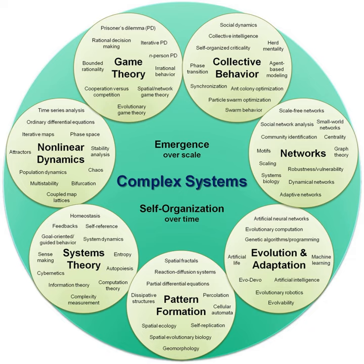As an interdisciplinary domain, complex systems draws contributions from many different fields, such as the study of self-organization from physics, that of spontaneous order from the social sciences, chaos from mathematics, adaptation from biology, and many others. Complex systems is therefore often used as a broad term encompassing a research approach to problems in many diverse disciplines, including statistical physics, information theory, nonlinear dynamics, anthropology, computer science, meteorology, sociology, economics, psychology, and biology.